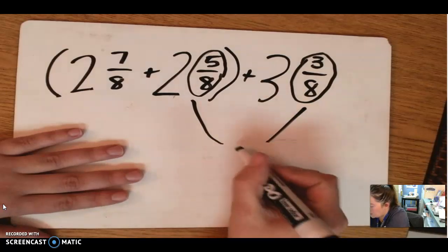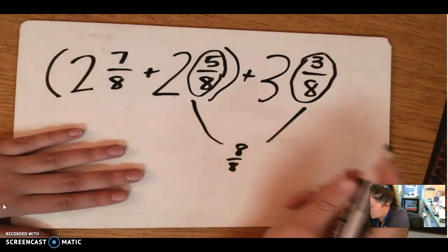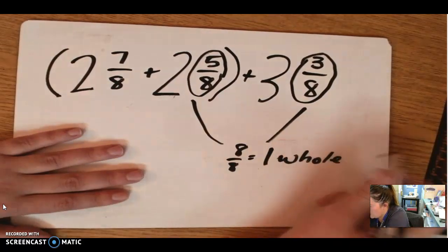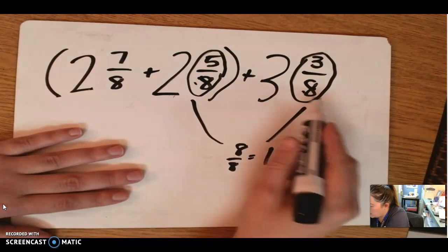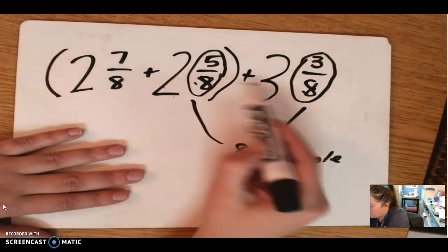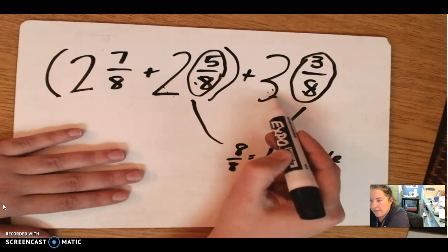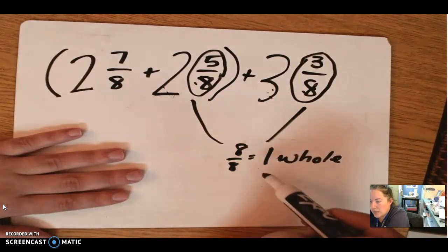5, 6, 7, 8 should be 8 eighths, right? So that should be 1 whole. So these two pieces are 1 whole combined. Add that with these whole numbers. So this is 2, 3, 4, 5, plus this one would be 6 wholes.